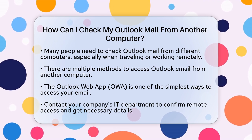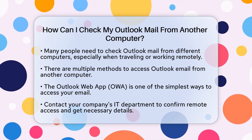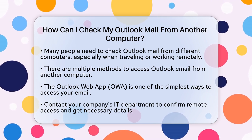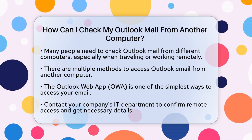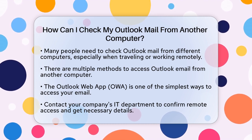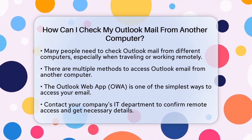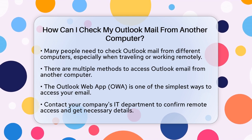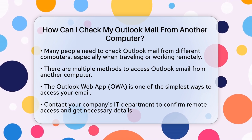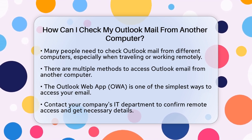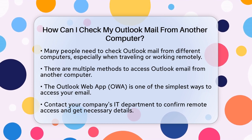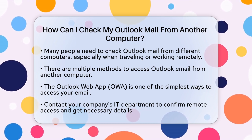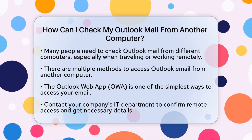There are a few ways to access your Outlook email from a different computer. One of the simplest methods is to use the Outlook Web App. To start, you'll need to contact your company's IT department to ensure that remote access is allowed and to get the necessary details. They will tell you whether your company uses Office 365 or Microsoft Exchange Online, which can affect how you access your emails.